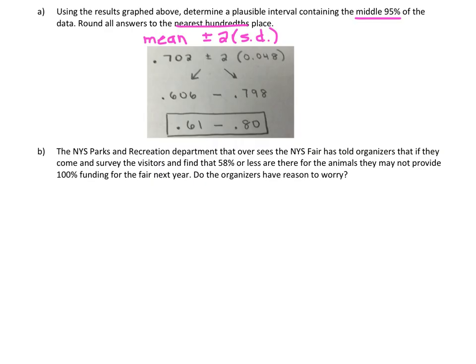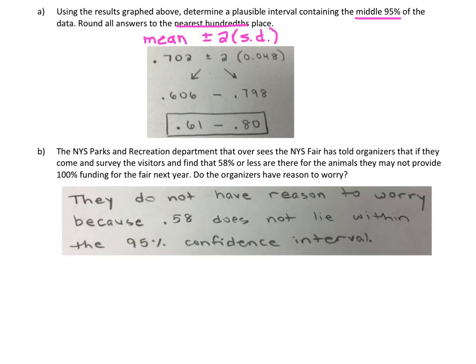Part B: the Parks Department says if 58% or less of visitors are there for the animals, they may not provide 100% funding. Should organizers worry? Since 0.58 falls outside the 95% confidence interval — it's less than the lower bound of 0.61 — this is not an expected outcome. The organizers do not have reason to worry because 0.58 does not lie within the 95% confidence interval; it's not an expected outcome.